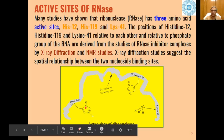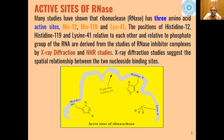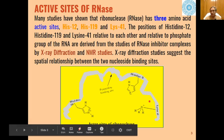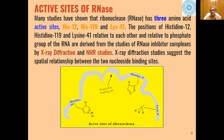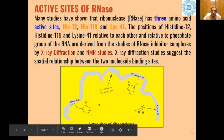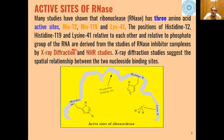The other nitrogen is acting as a base, whereas the other is a neutral histidine, that is histidine-12, and then we have lysine-41. These are the three active sites, and their positions relative to each other and in relation to the phosphate group are derived from X-ray diffraction studies and NMR studies.